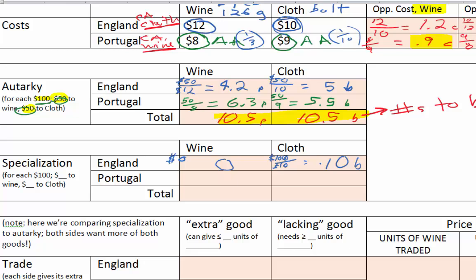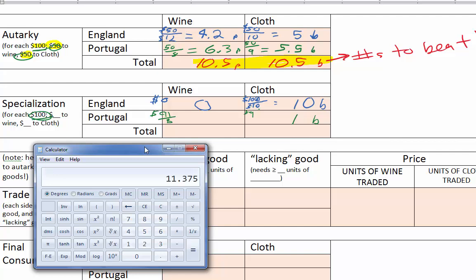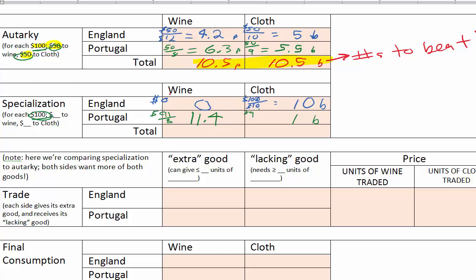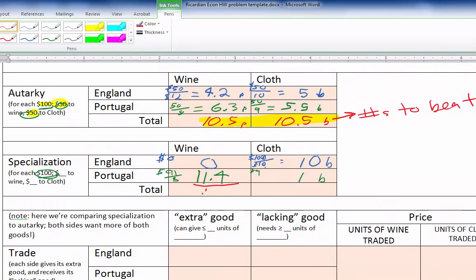Let's have Portugal make just one bolt of cloth. Working backwards: it takes $9 to produce one bolt, so Portugal spends $9 on cloth, leaving $91 out of their $100 to make wine. At $8 per pipe of wine, $91 divided by $8 equals 11.4 pipes of wine. So in specialization: England makes 10 bolts of cloth and zero wine; Portugal makes 1 bolt of cloth and 11.4 pipes of wine.